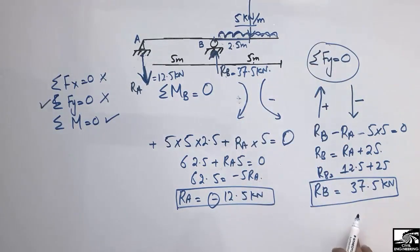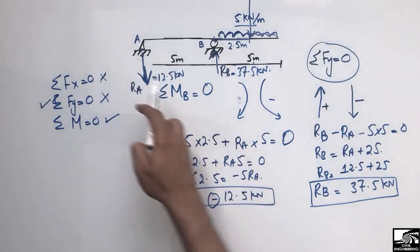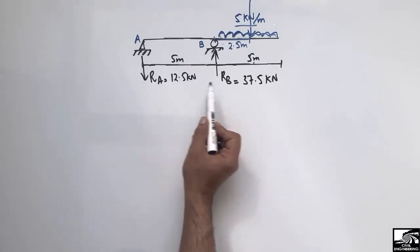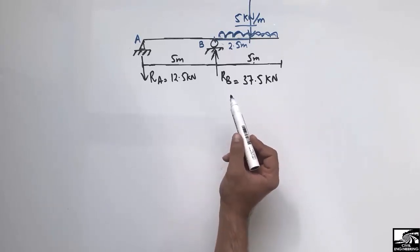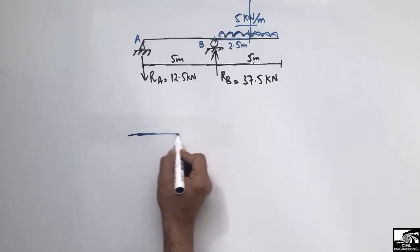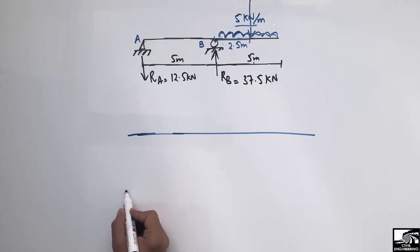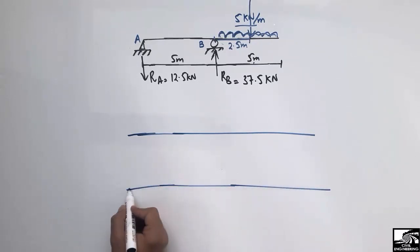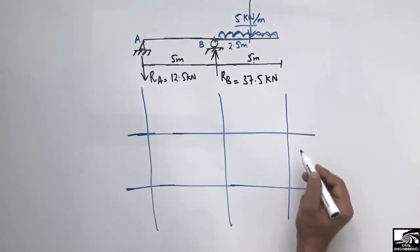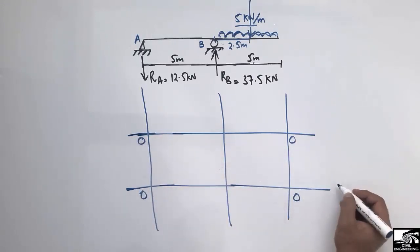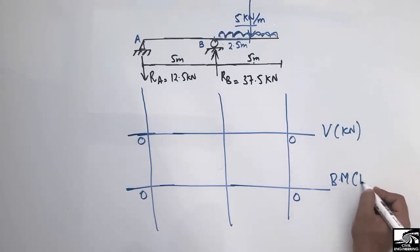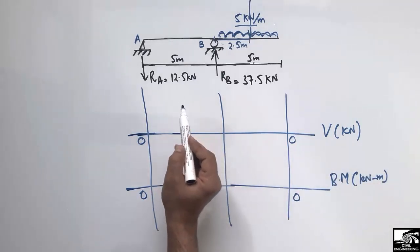Now after finding Ra = 12.5 kN (downward) and Rb = 37.5 kN (upward), we can draw the shear force and bending moment diagrams. First, I draw the reference lines: one reference line for the shear force diagram and one for the bending moment diagram. Values above the reference line are positive and below are negative. The vertical axis units are kN for shear force and kN·m for bending moment.